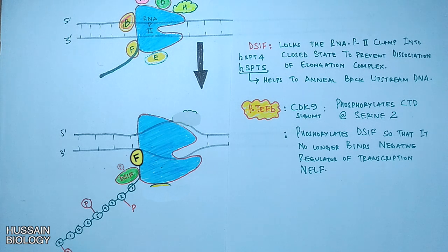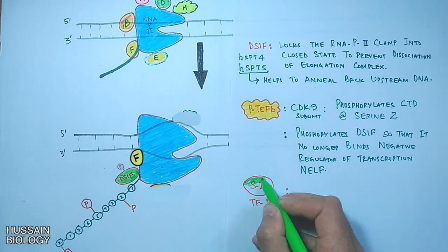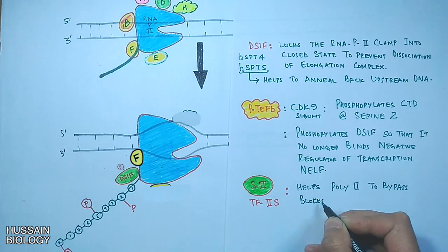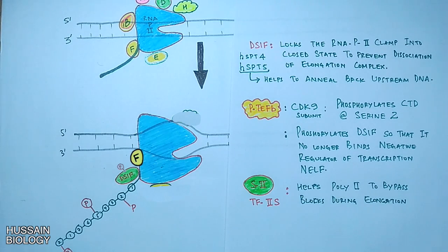Then we have another factor that is SPT2 factor or TFIIS. It binds to the complex and helps polymerase to bypass the blocks during transcription. So these are the major elongation factors, otherwise there are many factors that take part in elongation.